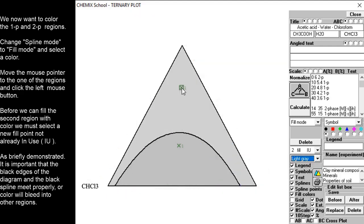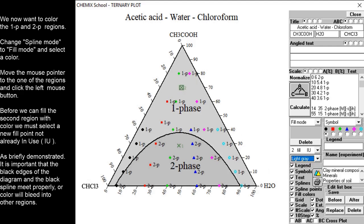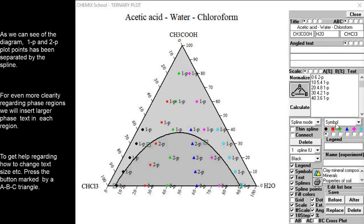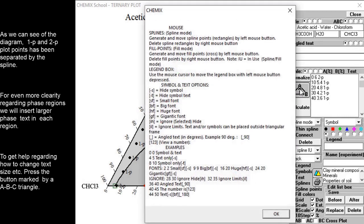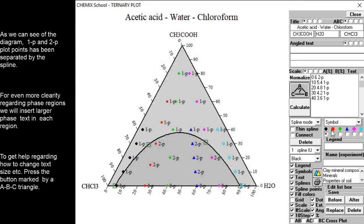First, click the ternary plot help button to study a few examples of how to manually insert text using the edit field. Insert big sized text in both regions.